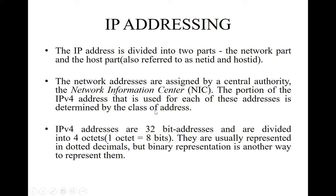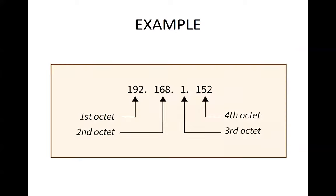Each address is a 32-bit address divided into four octets. For example, 192.168.1.152 — this belongs to one of the class addresses and is represented in the form of decimal notation. The same IP address can also be represented in the form of binary.